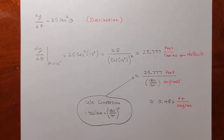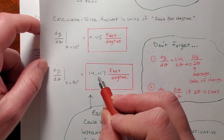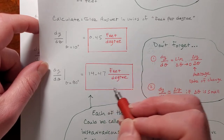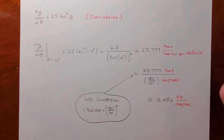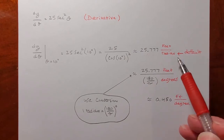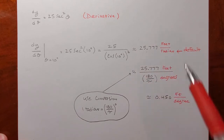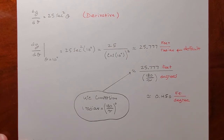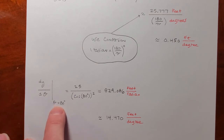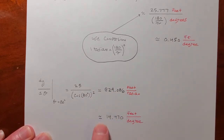I don't like saying feet per radian — it doesn't get the idea across. I can much better imagine that a one degree change in the angle causes 14.5 feet of movement up and down. So we'll convert feet per radian to feet per degree. One radian is 180 over pi degrees, so 25.777 feet over one radian times 180 over pi degrees per radian gives 0.450 feet per degree. For the other case, dy over dθ when theta is 80 degrees, done the same way, you'll get 14.47 feet per degree.